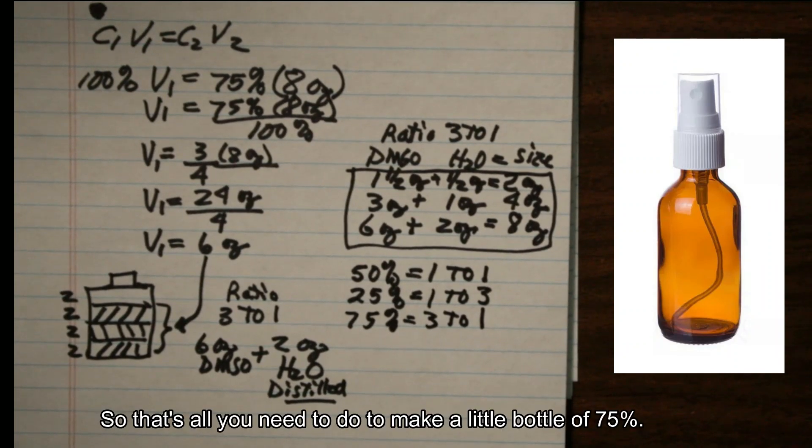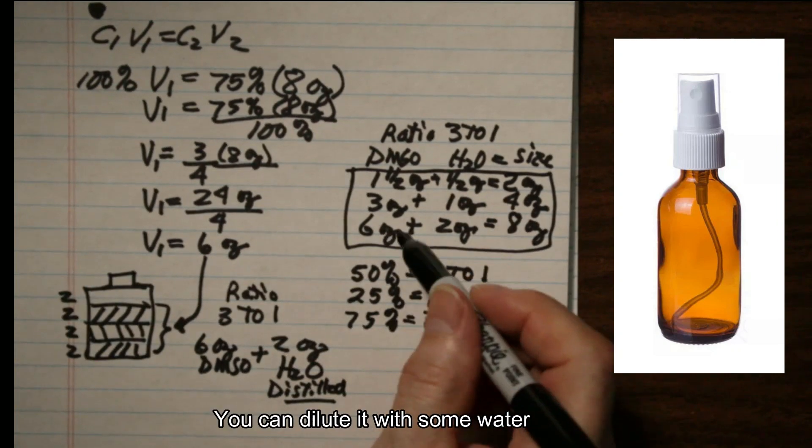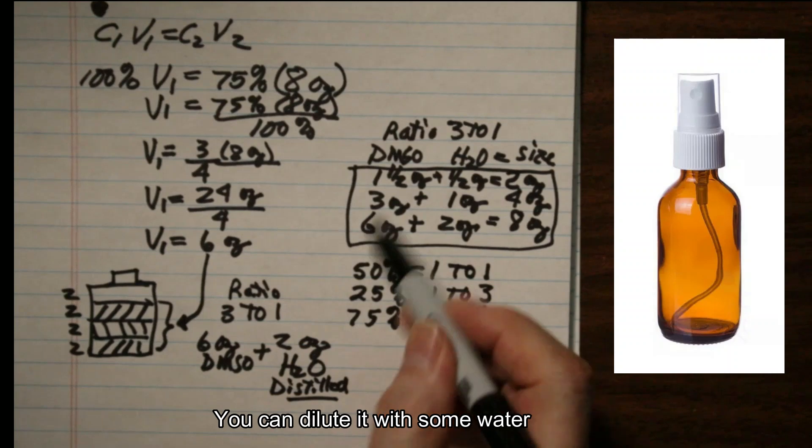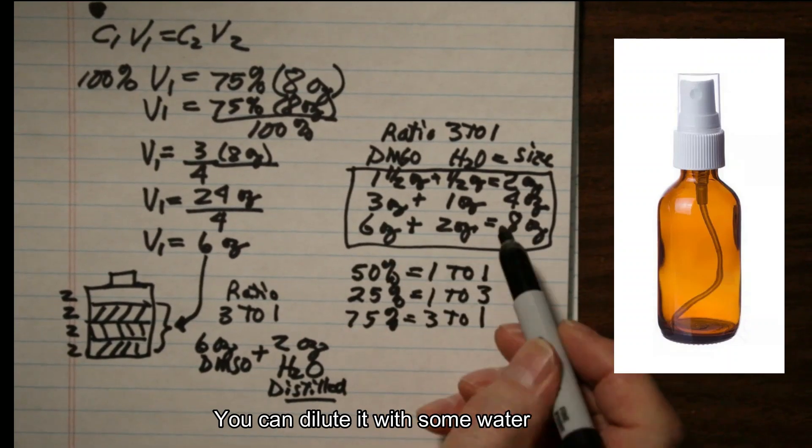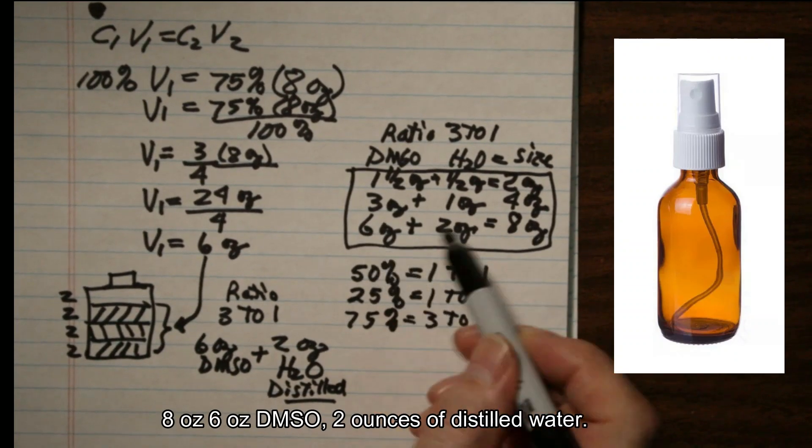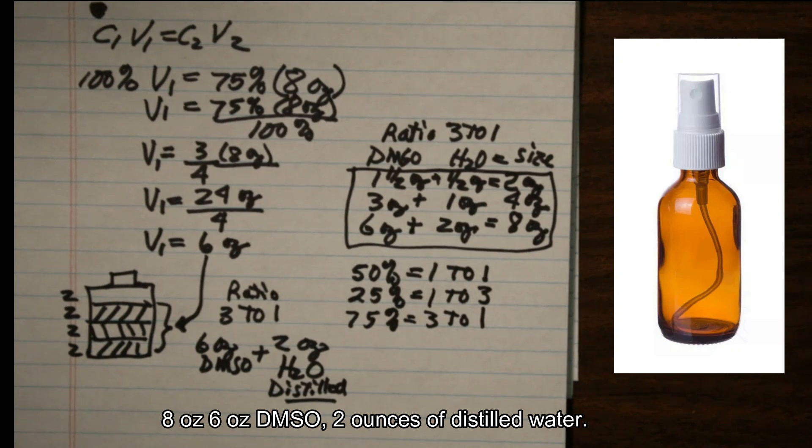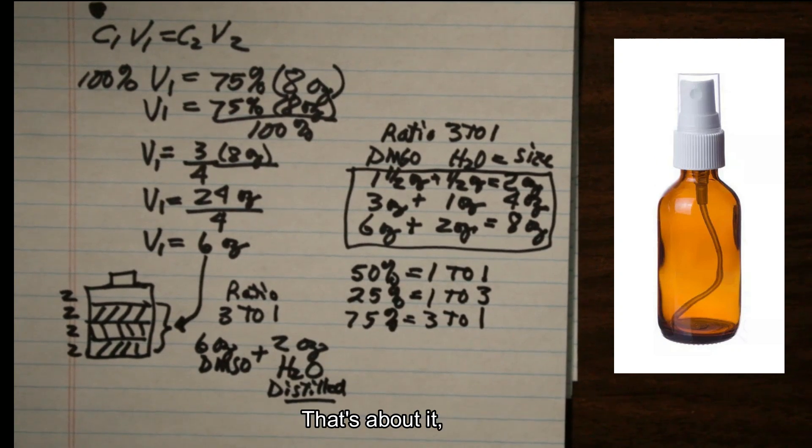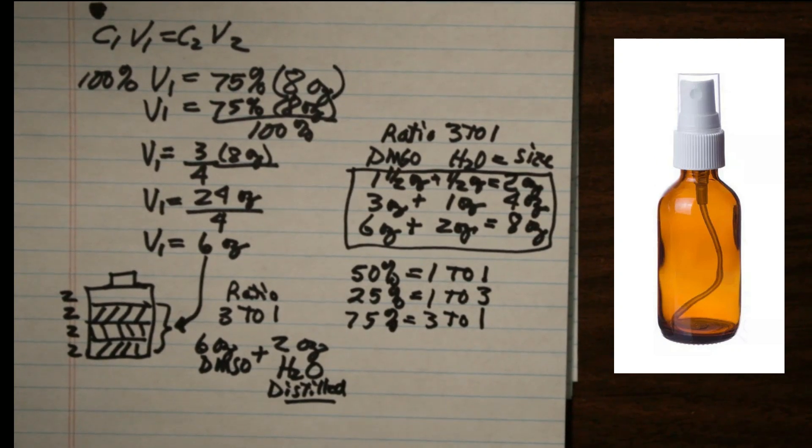So that is all you need to do to make a little bottle of 75%. You can dilute it with some water. It comes out 8 oz, 6 oz DMSO, 2 oz of distilled water. That's about it.